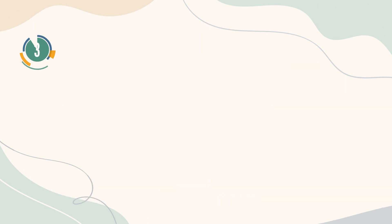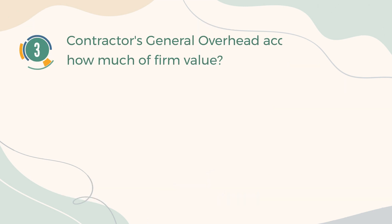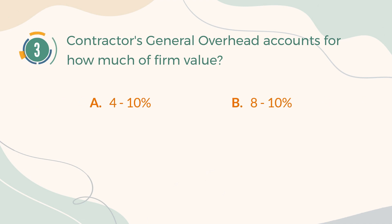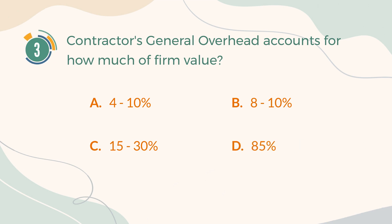Number 3. Contractors' general overhead accounts for how much of firm value? A. 4 to 10 percent. B. 8 to 10 percent. C. 15 to 30 percent. D. 85 percent.